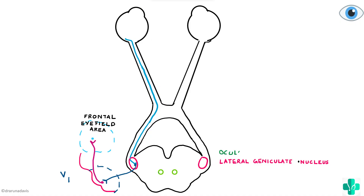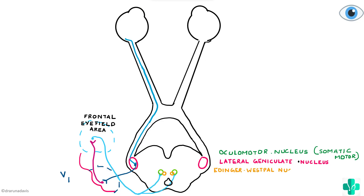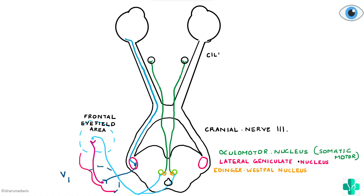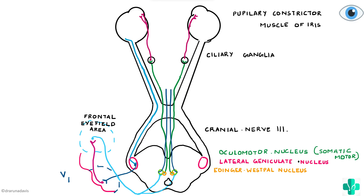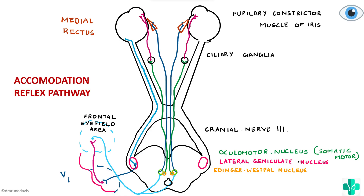From the primary visual cortex, impulses are transmitted to the frontal eye field area. From the frontal eye field, information passes to the oculomotor nerve nucleus — not only the Edinger-Westphal nucleus but also the somatic motor nucleus. Just like in the light reflex, via the oculomotor nerve it reaches the ciliary ganglion, which via the short ciliary nerve causes constriction of the pupil. Because the somatic motor nucleus is involved, it also sends impulses to the medial rectus, causing convergence of the eyeballs.